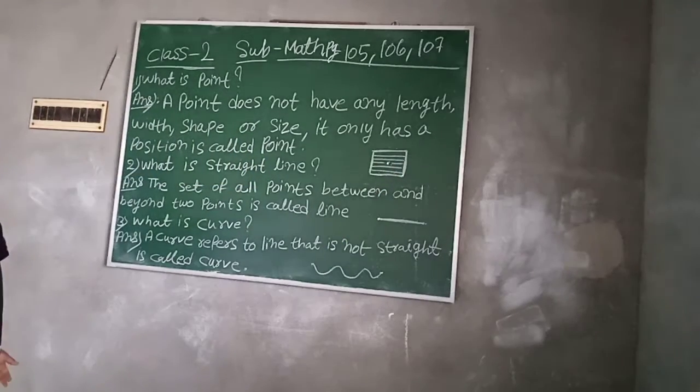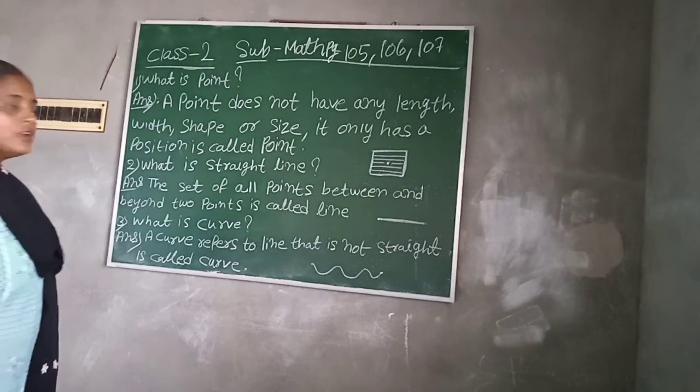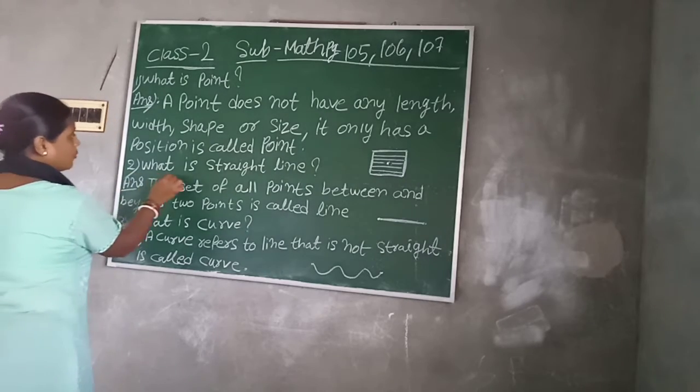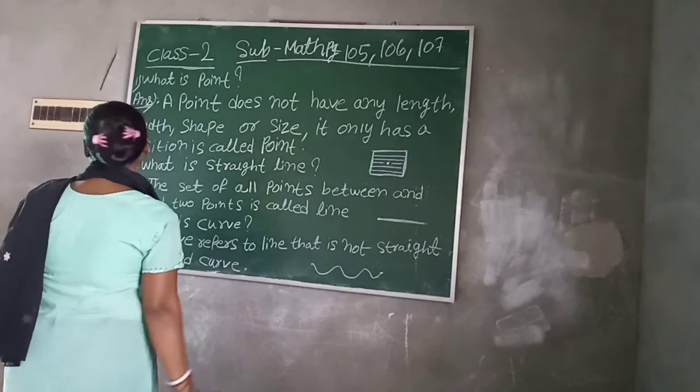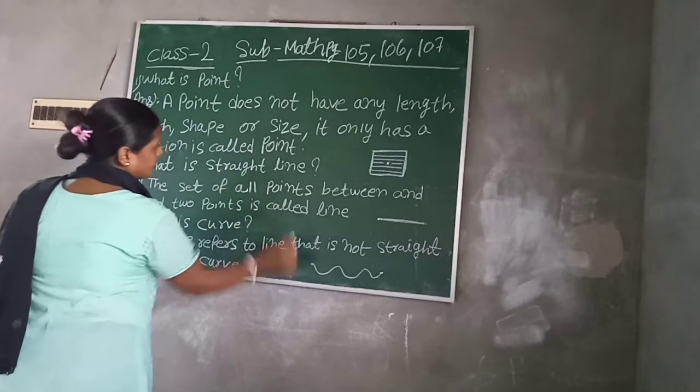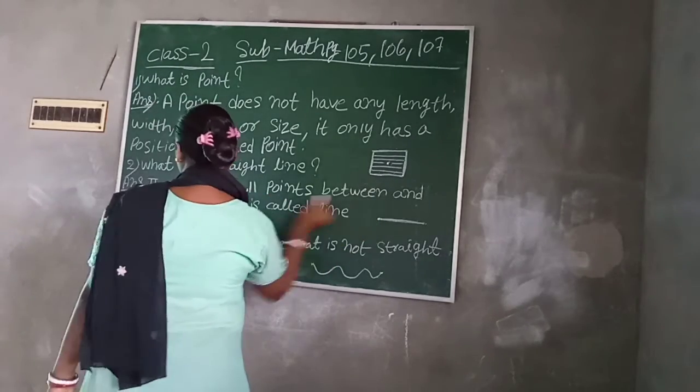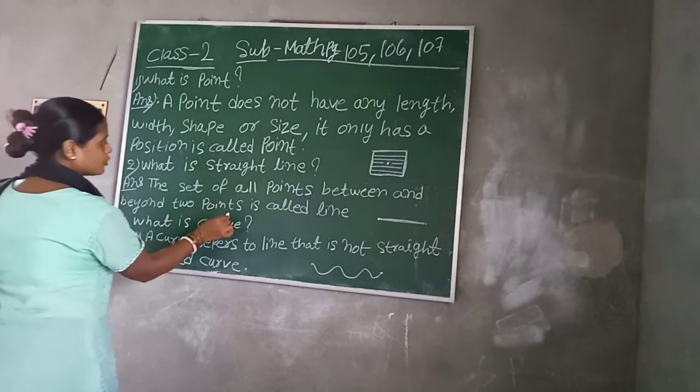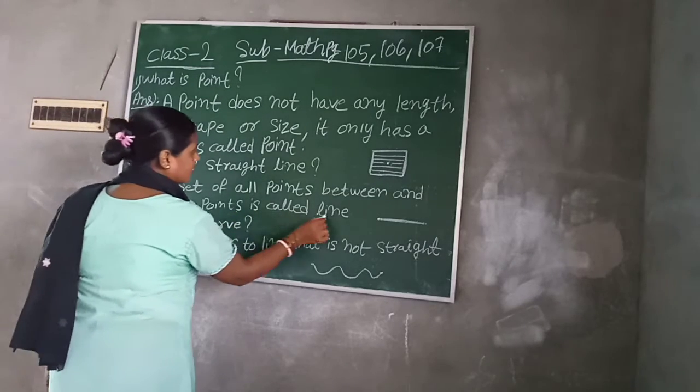Number two, what is straight line? A straight line is the set of all points between and beyond two points. It is called line.